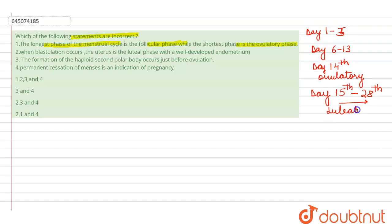So no doubt about it that the ovulatory phase is the shortest, but the follicular phase is certainly not the longest. It is the luteal or the secretory phase. So this makes this statement as the false statement.